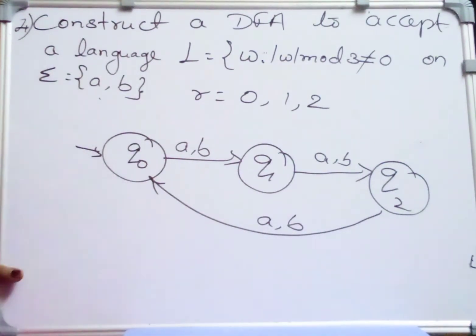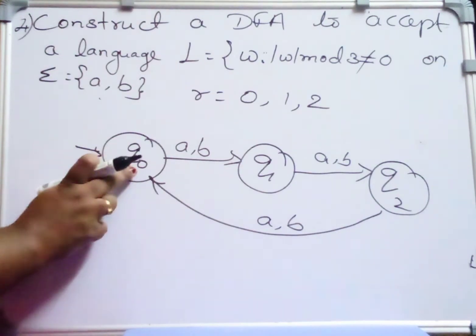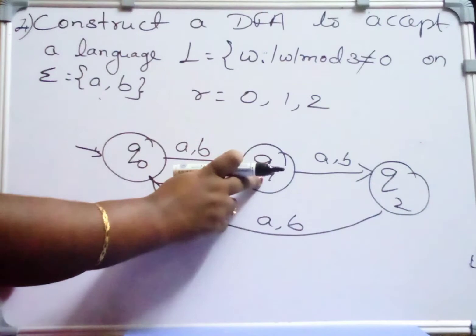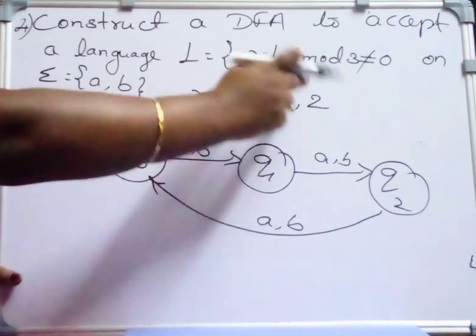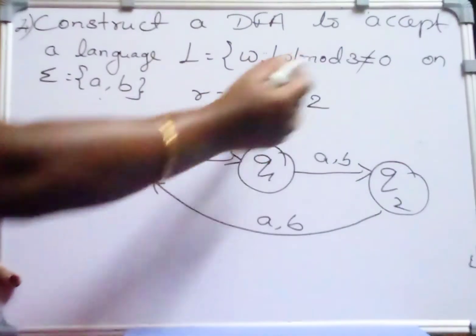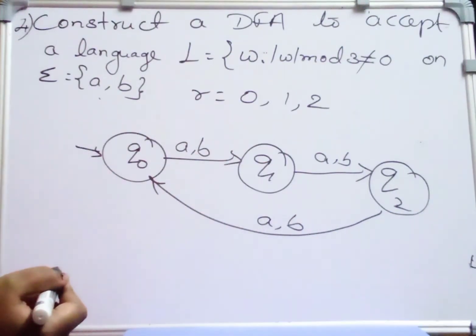After writing this I should identify my final state here. So the first state will have only the remainder 0. Second state will be having the W mod 3 with remainder 1, and third state will be having mod 3 with remainder 2.